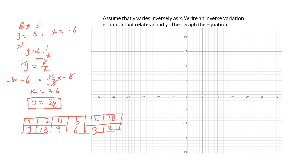Now we plot these points on the coordinate plane. The first point is (2, 18): x is 2 and y is 18. The second point is (4, 9). Then (6, 6): x is 6 and y is also 6. Then (12, 3): x is 12 and y is 3. The last one is (18, 2): x is 18 and y is 2.